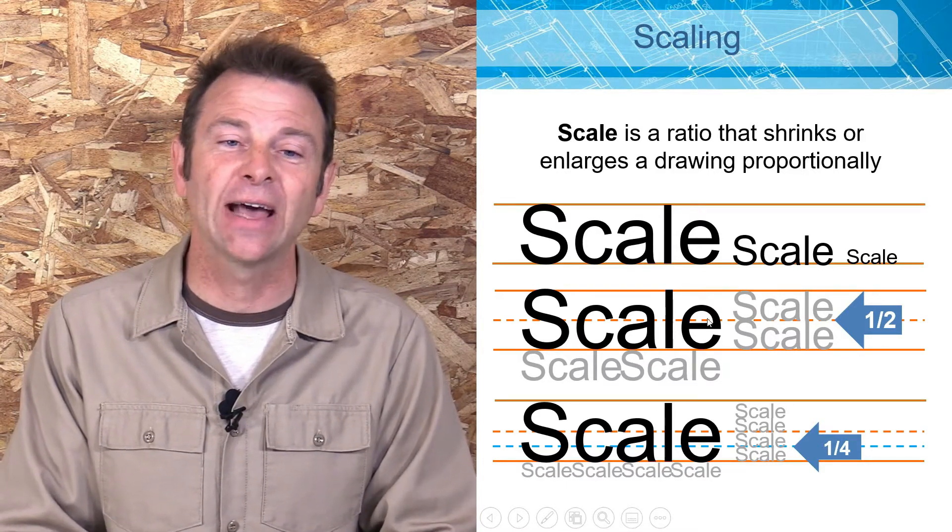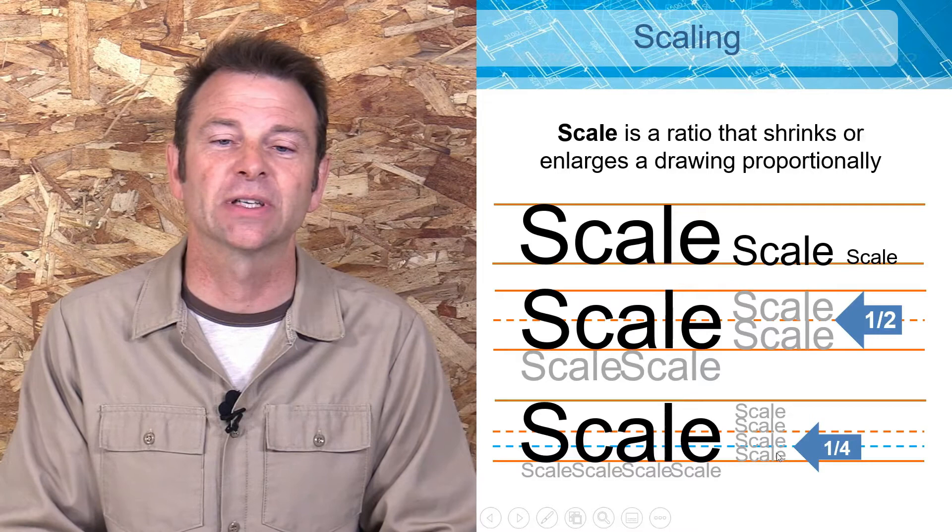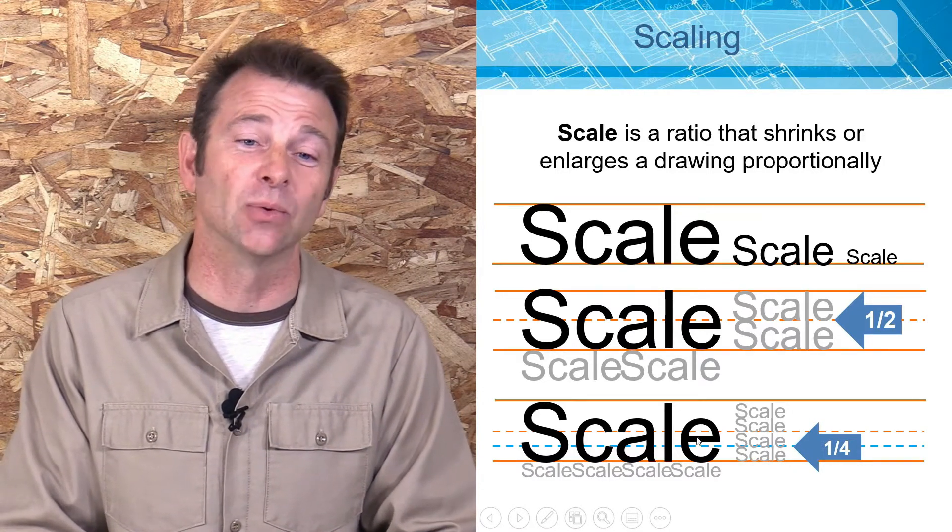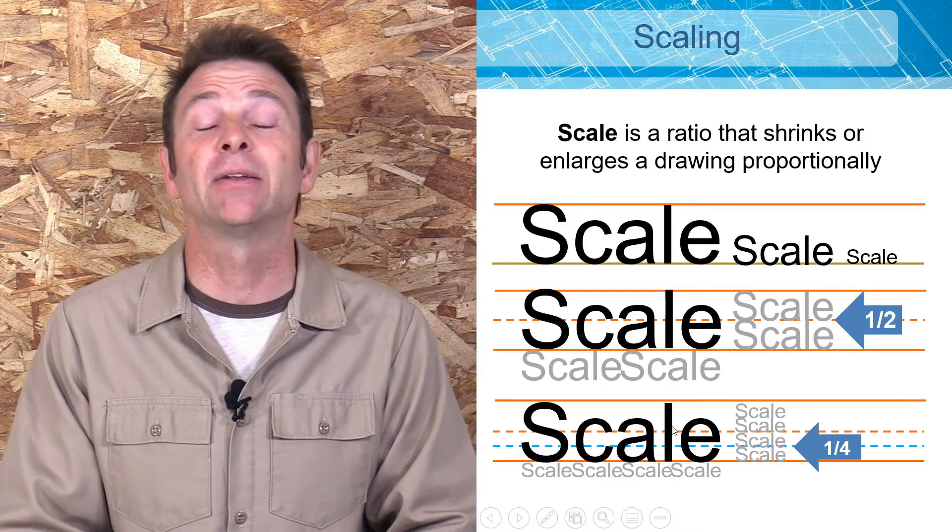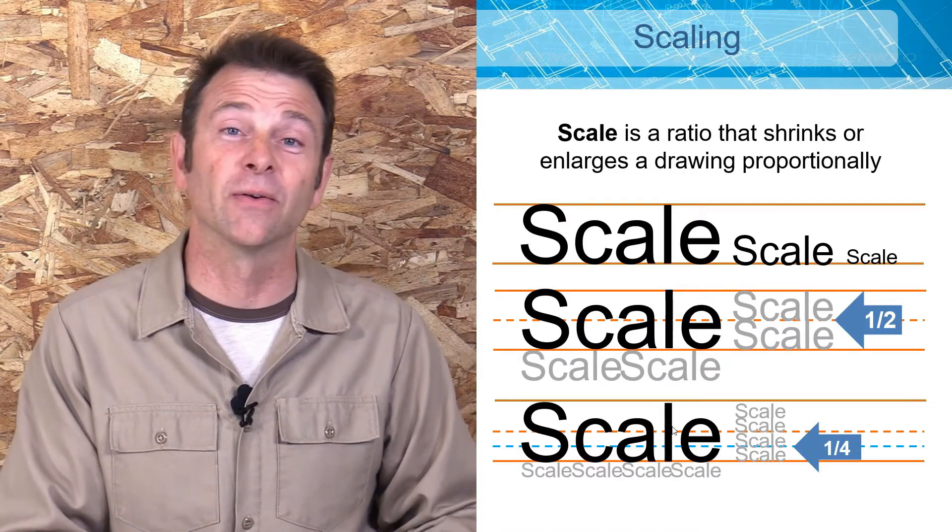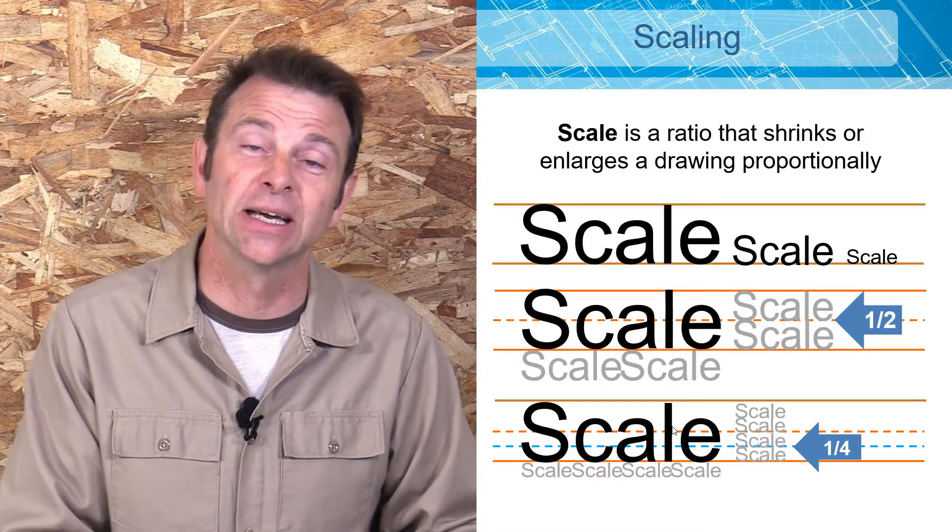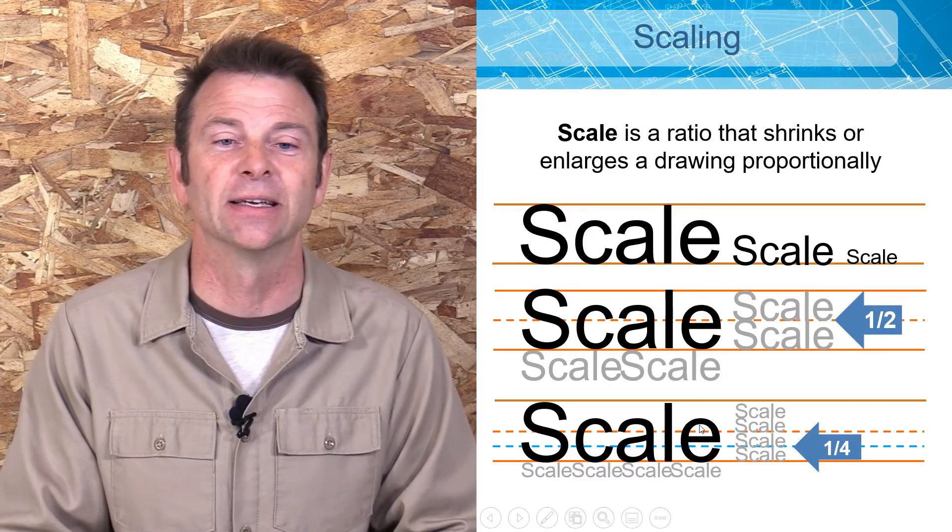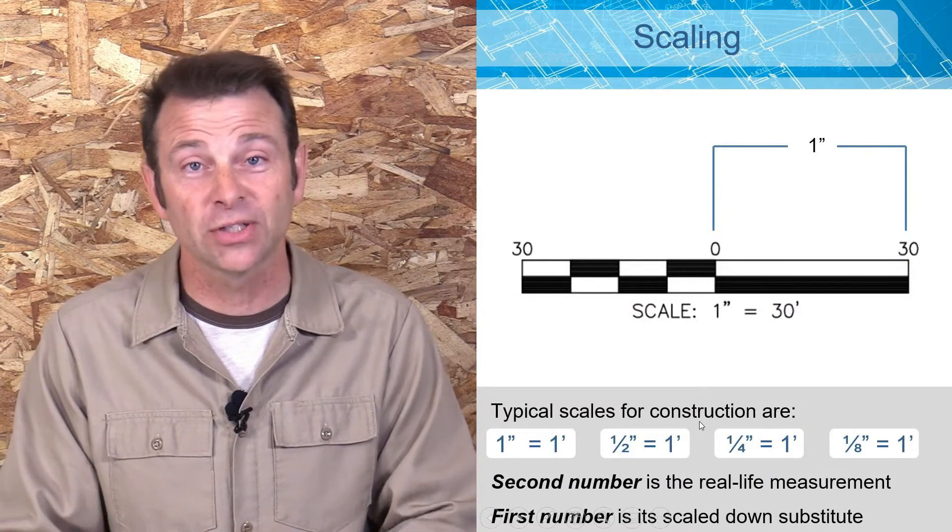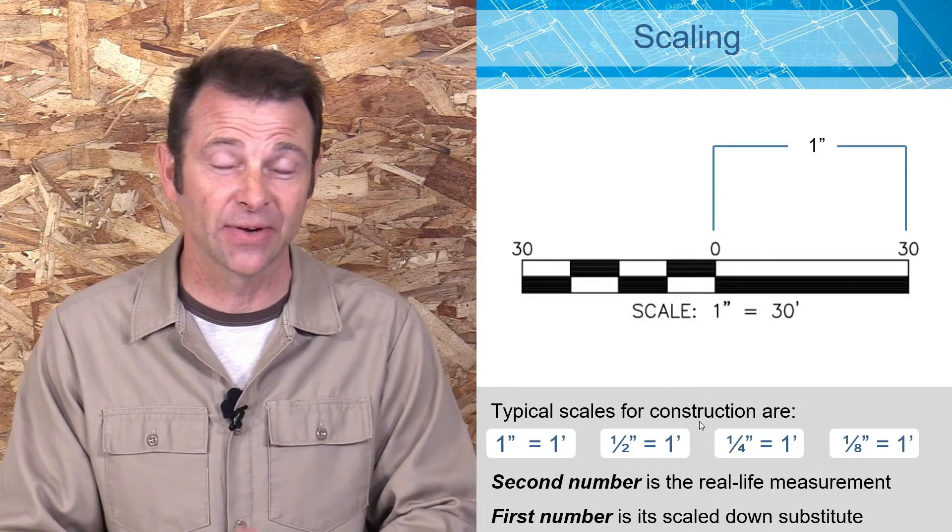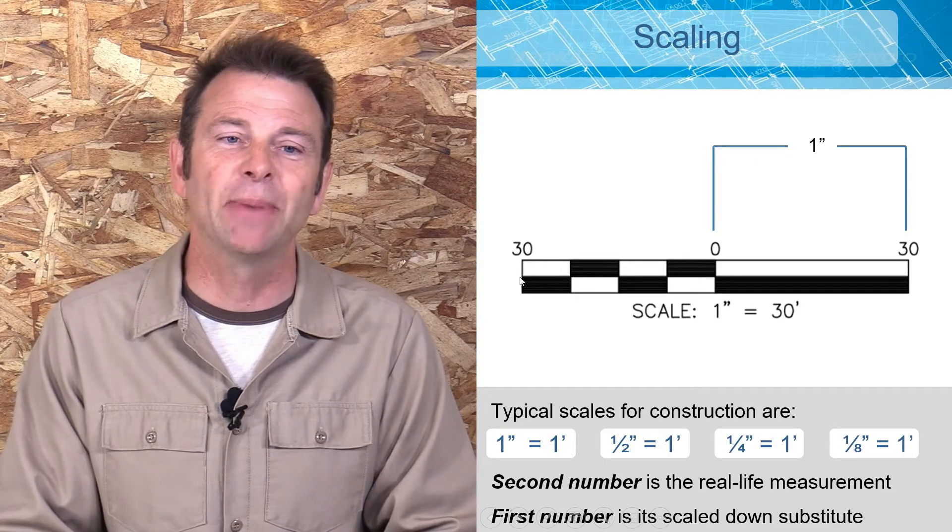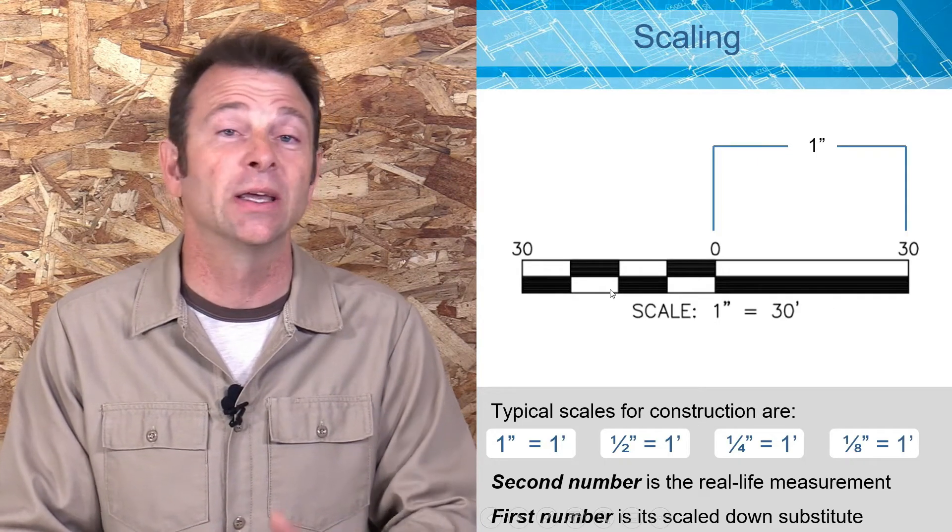If you wanted to do half scale on this word, as you can see here, you're going to make that half as high and half as wide. So this is half scale. Here we have quarter scale. These words are actually a quarter of the size of the original word. If you think about it, you have the original or full size object and then you're just shrinking it to a specific size afterwards. That's all that scaling is.